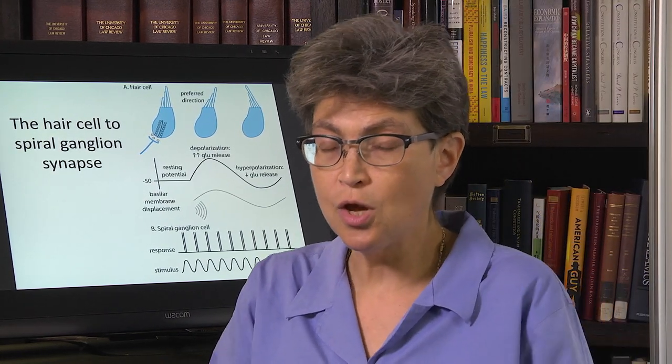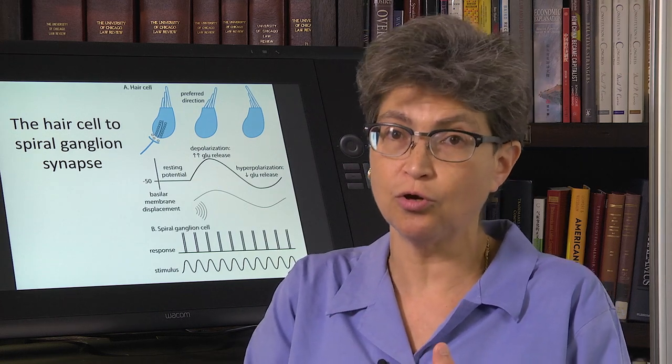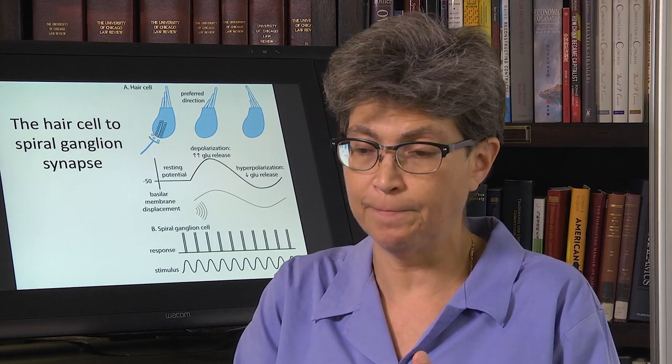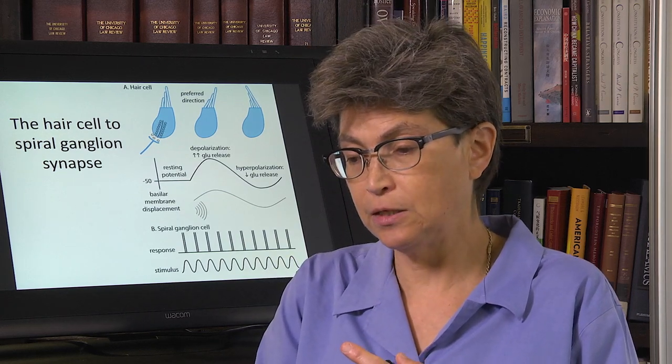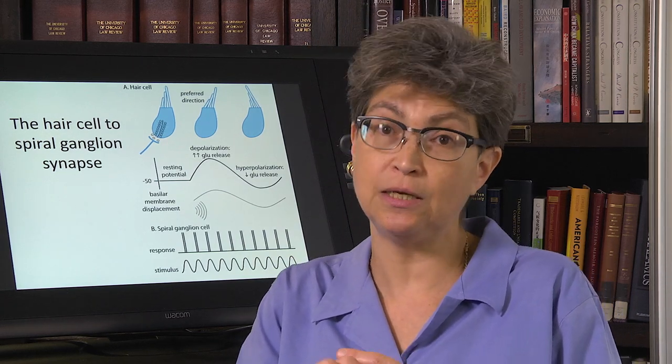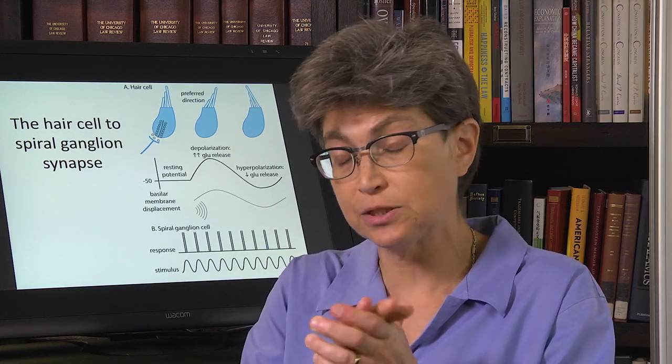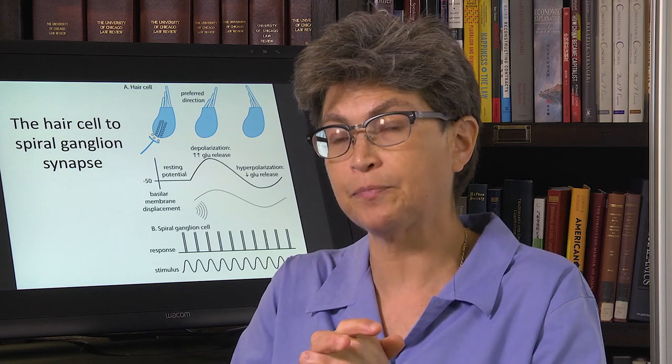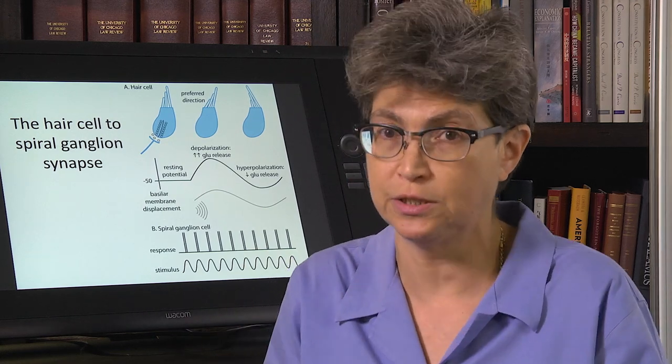So what can go wrong here? Well, the MET channel is, first of all, the endocochlear potential is vulnerable. It's vulnerable to all manner of mutations in connexins that are very important to the stria vascularis. So connexin mutations are one of the most common causes of deafness.